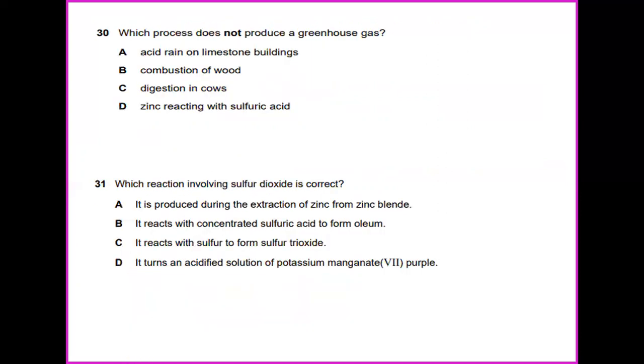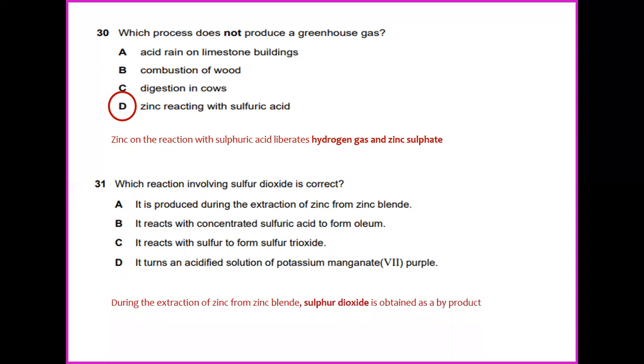Which process does not produce a greenhouse gas? So the answer would be D. Which reaction involving sulfur dioxide is correct? During the extraction of zinc from zinc blende, sulfur dioxide is obtained as a byproduct. So the answer for this would be A. It is produced during the extraction of zinc from zinc blende.